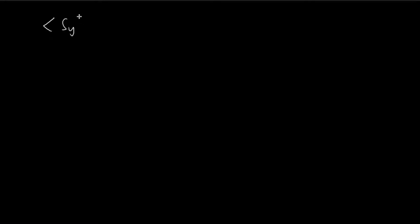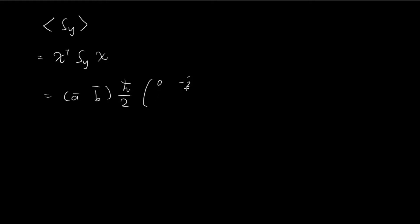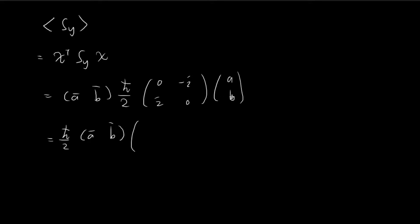Moving on, we do the same thing for Sy using the same formula, except this time the matrix is Sy, which equals ℏ/2 times the matrix (0, −i; i, 0). Applying this to the spinner AB and pulling out the constant, we get −iB in the first entry and iA in the second. Then multiplying with the conjugate row vector gives −i·A*B plus i·AB*.